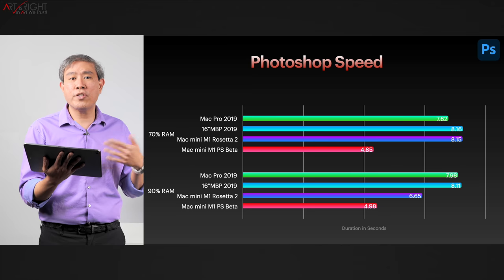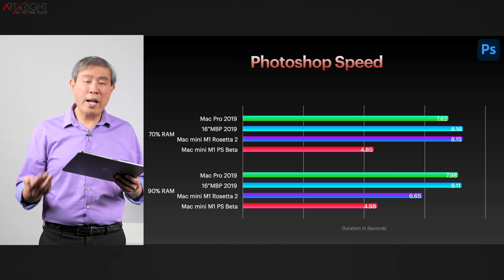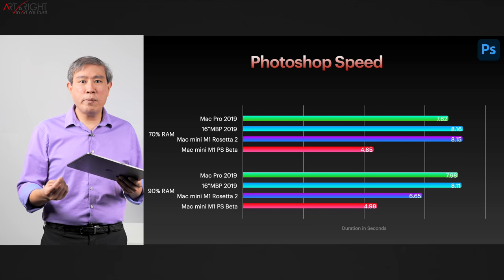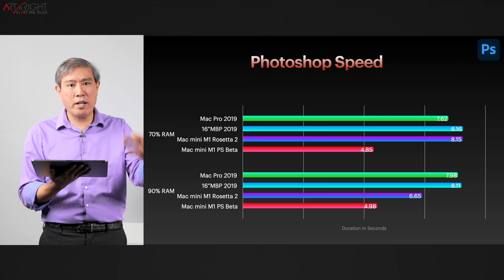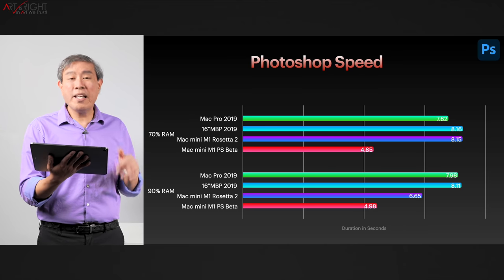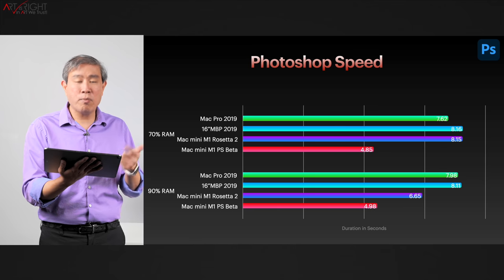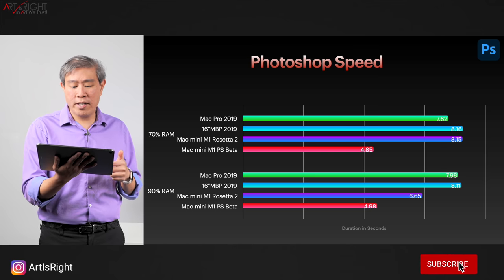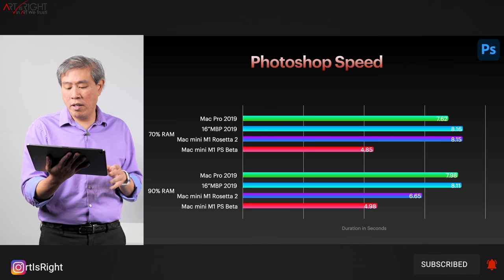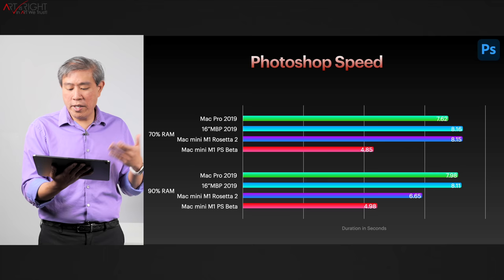I also tested two different RAM configurations — 70% and 90% RAM allocated. On the Intel Macs, there's almost no change in time when bumping up RAM, because of the older memory architecture where the processor has to make a call to the memory and data loads from the SSD or NVMe. Something interesting happens on the M1 due to its unified memory architecture: bumping RAM from 70% to 90% on Rosetta cut almost two seconds off the time. Running on the native Photoshop beta, however, the time barely changed — differences are within margin of error.